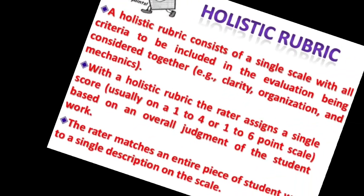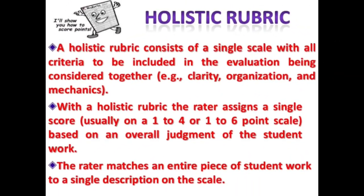There are two types of rubrics: holistic rubric and analytic rubric. A holistic rubric consists of a single scale with all criteria — such as clarity, organization, and mechanics — considered together. The rater assigns a single score, usually on a 1 to 4 or 1 to 6 point scale, based on overall judgment of the student work, matching the entire piece to a single description on the scale.